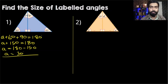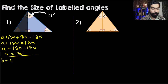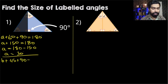Now we will use the same understanding to find the measure of angle B. Let's form an equation: B plus 45 degrees plus this right angle which is 90 degrees is equal to 180 degrees.